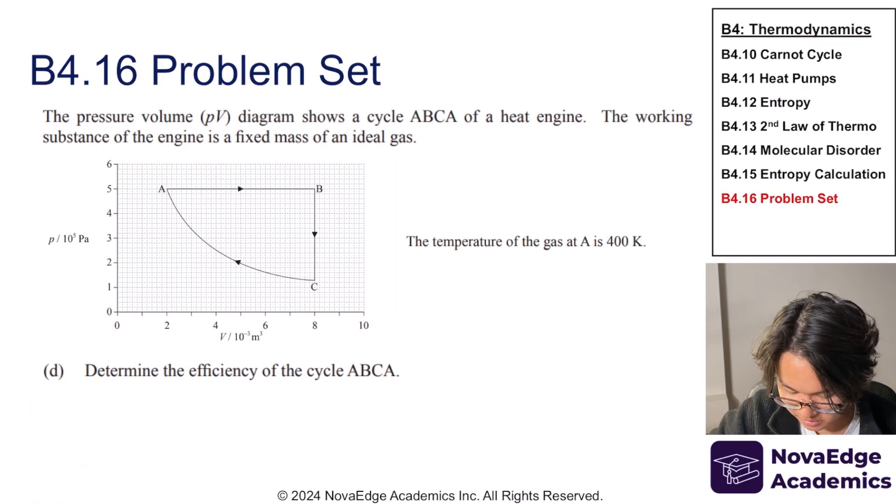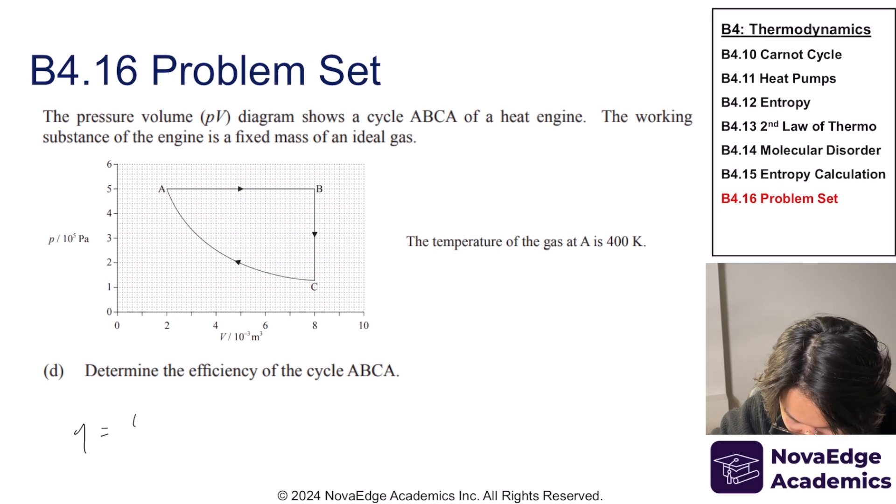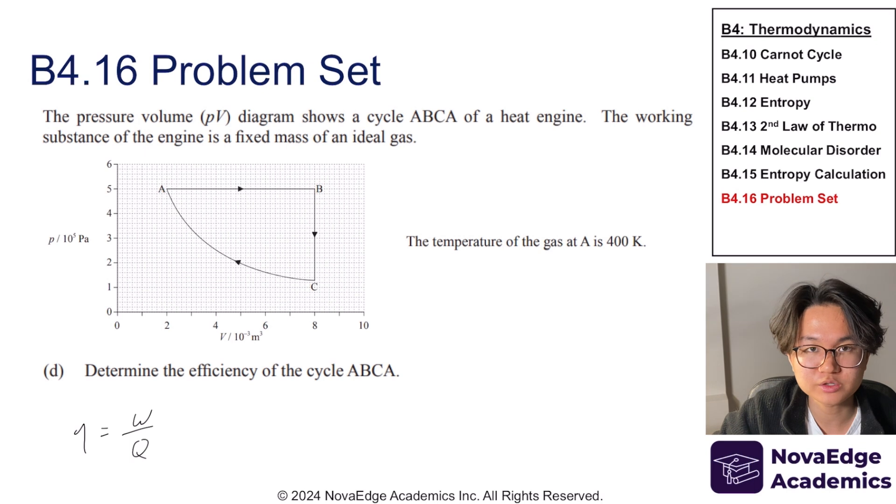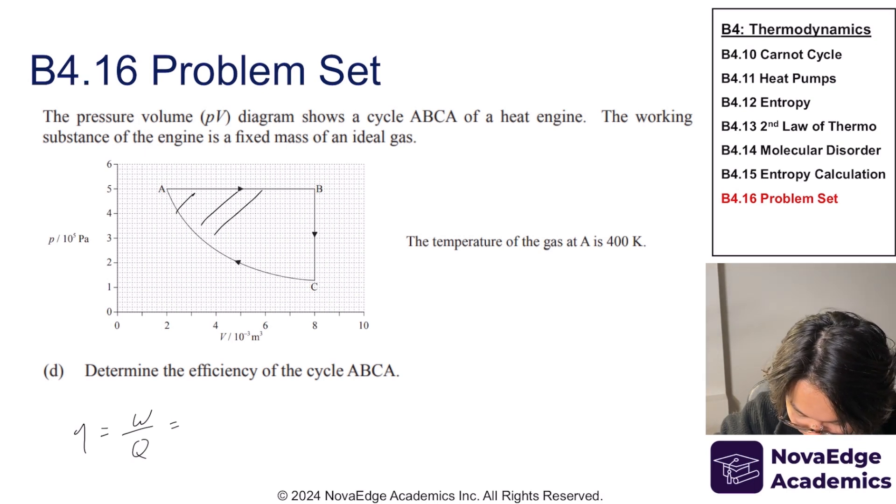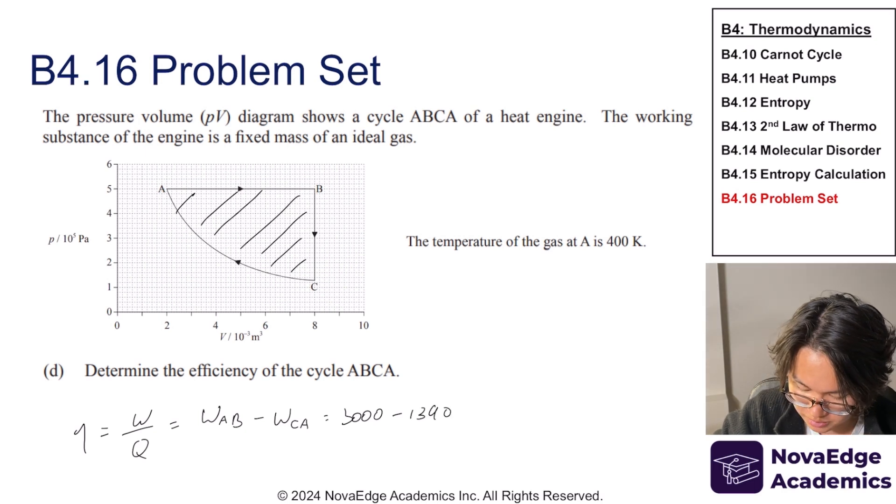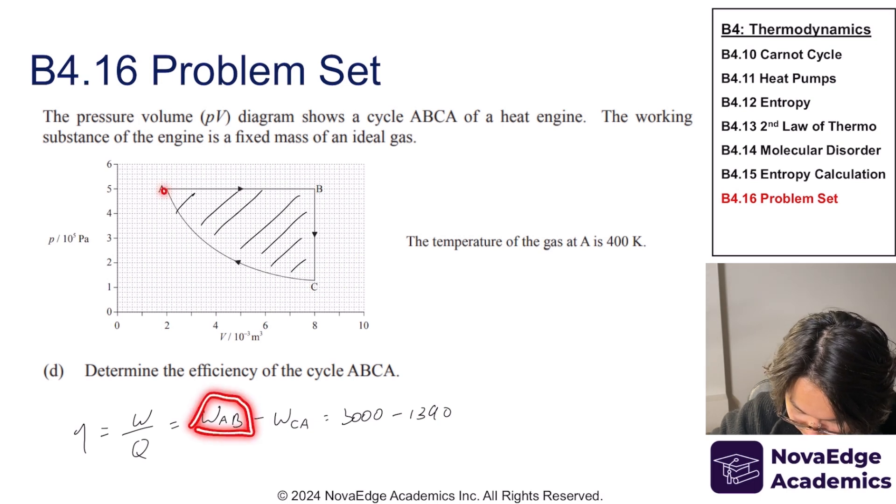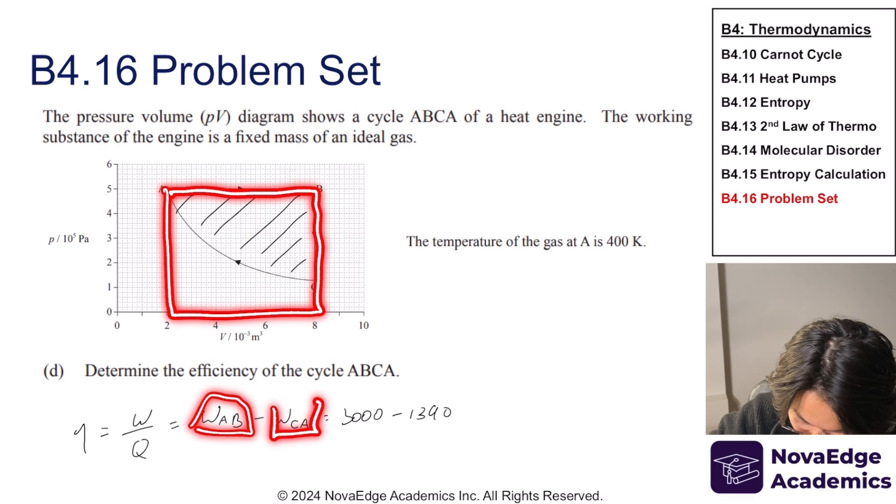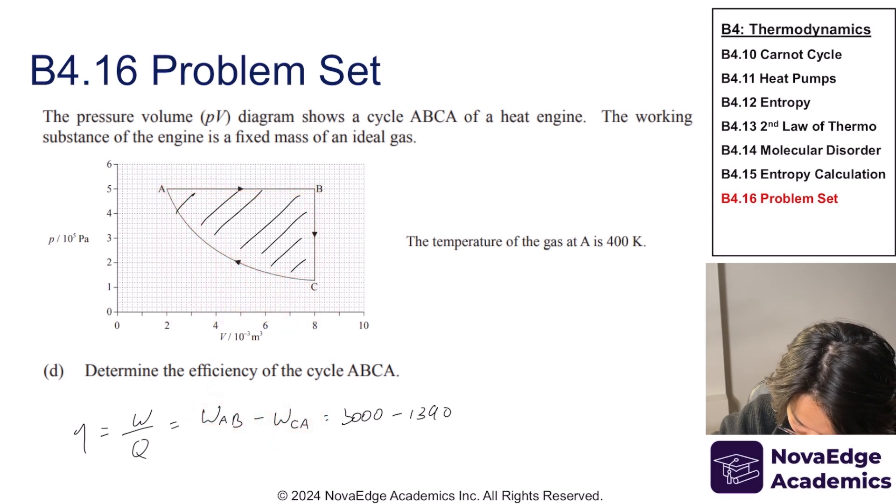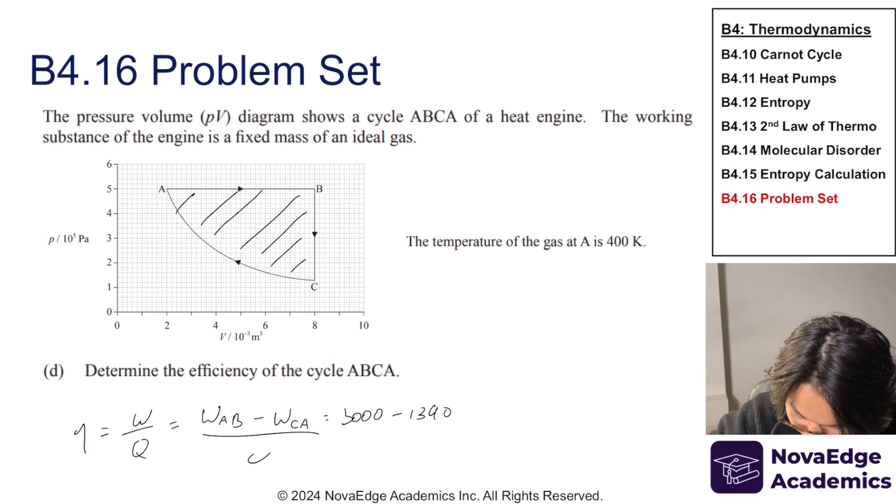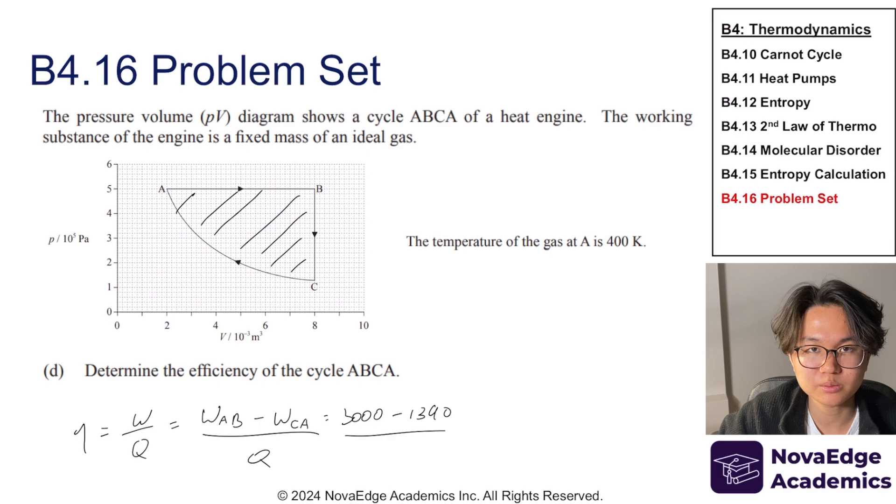All right. To do part D, we need to determine the efficiency of the cycle. And the efficiency we know is given by the net work divided by the thermal energy that we've supplied. And the net work is actually equal to the area of here, which is actually equal to work done in AB minus by work done to CA. So that's actually just 3000 joules minus by 1319. And that actually corresponds to the area because this is this area. And this is this area. So if you minus that, then you actually get that.